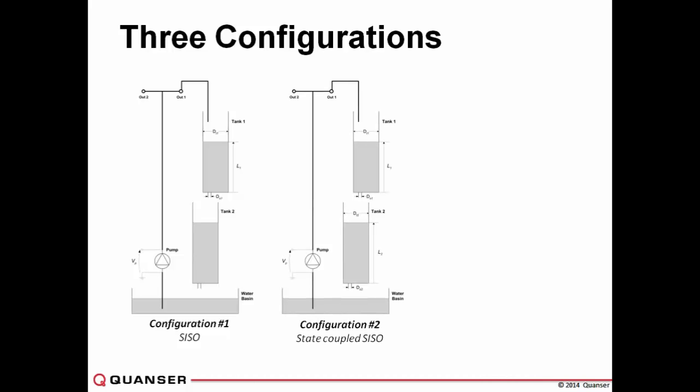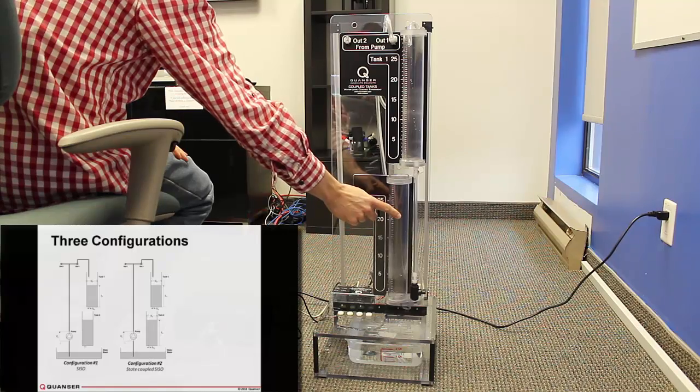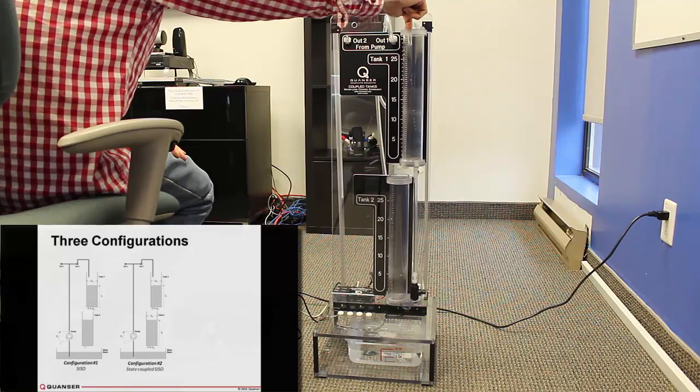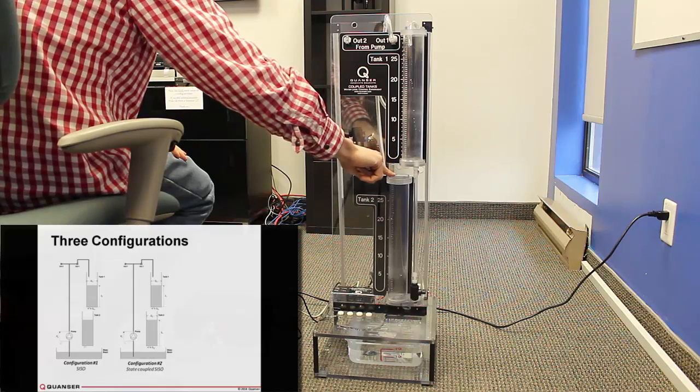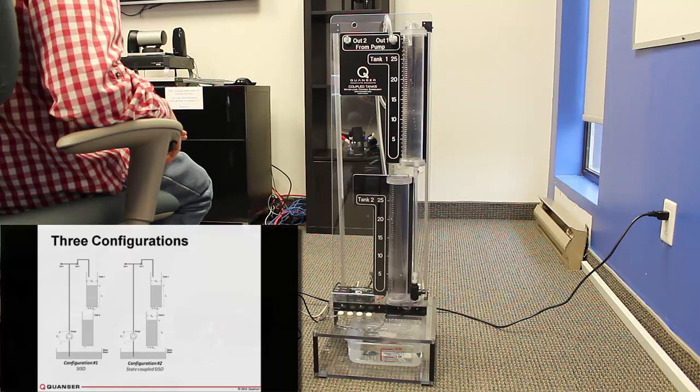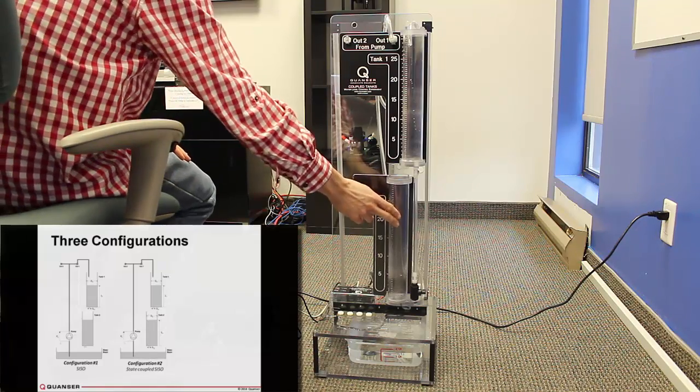Configuration number two. This is what we call a state-coupled SISO system. It's single input, multiple output really, because you're measuring both tank one and tank two. But it's state-coupled. Now the goal is to control the level in your second tank, but you have to do that through the first tank. Your inflow would go inside tank number one, and then the output of tank one pours into tank number two. Now you're dealing with a coupled system. You have to deal with the level of tank one and tank two in order to stabilize your liquid in the bottom one.